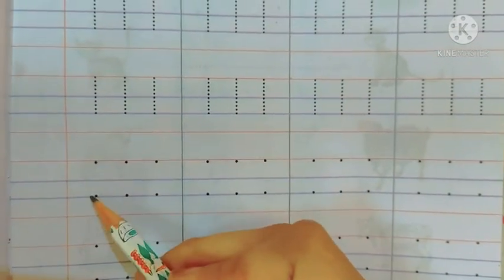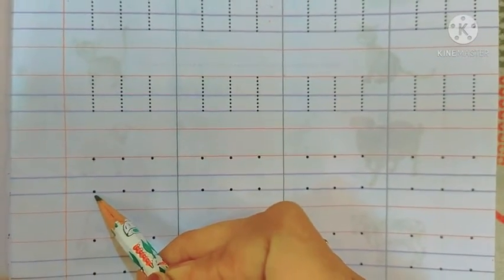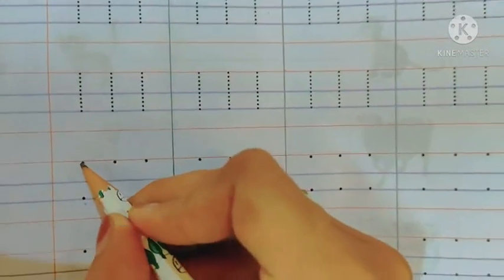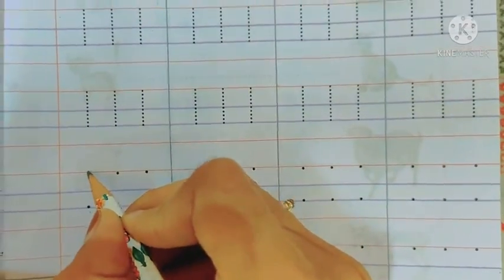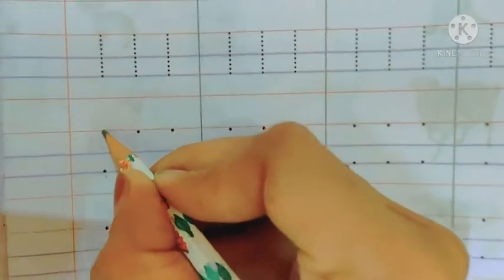Now, we will join these two dots only. Okay. So, let's join. We have to join this first dot to the last dot to make standing line.